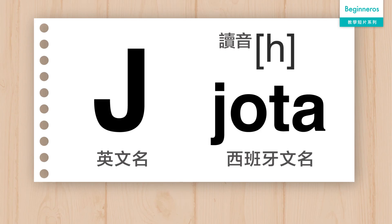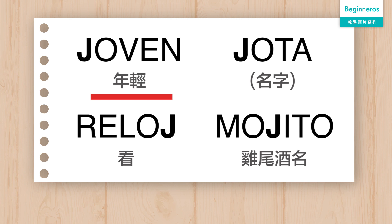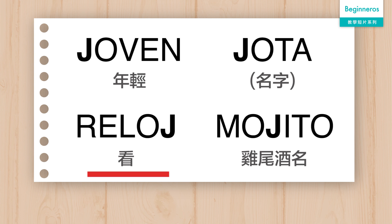J in Spanish is called Jota. It sounds like G followed by E or I. For example, Jota, Reloj, Mojito.